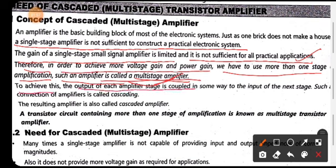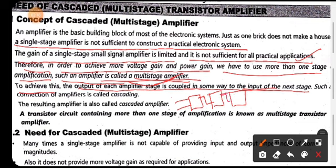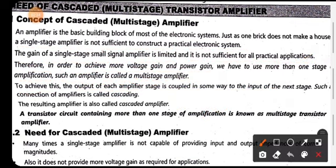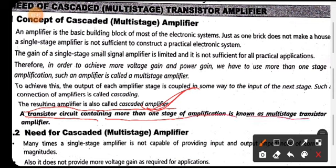To achieve this, the output of each amplifier stage is coupled in some way to the input of the next stage. If we connect stages to each other in multi-stage, the output of one stage is connected to the input of the next stage. The result of this configuration is also known as a cascade amplifier. A transistor circuit containing more than one stage of amplification is known as a multi-stage amplifier.